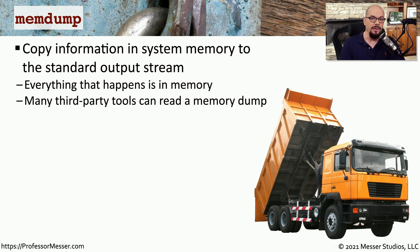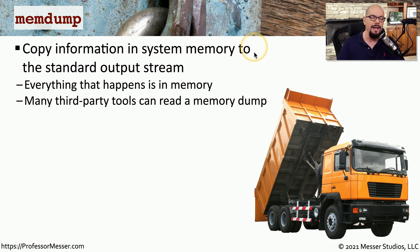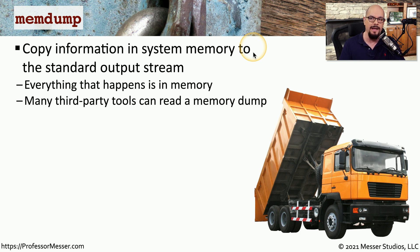If you are performing forensics on a system, you might be interested in what's on the storage drive, but you might also be interested in gathering what might be in memory. In order to capture that information, you can use the memdump utility that will take all of the information in system memory and send it to a particular location on your system. This is very useful after the fact, because many third-party forensics tools can read this memory dump file and be able to identify or locate information that may be stored in that memory file.